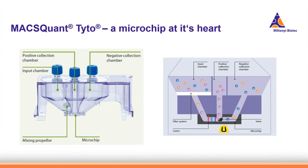At the heart of the MACSQuant Tyto there is a microchip. The cells are inserted into the input chamber. At the bottom there is a mixing propeller keeping the cells in suspension at all times. Cells are sorted into the positive collection chamber and the non-target cells will all flow through to the negative collection chamber. At the bottom of the cartridge there is a microchip.